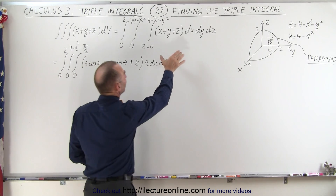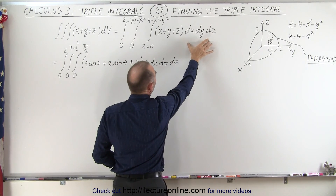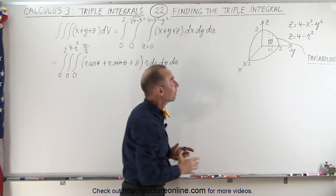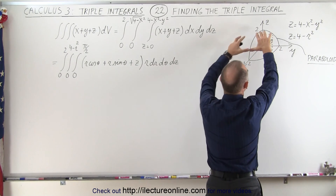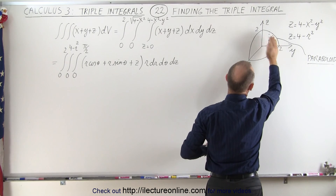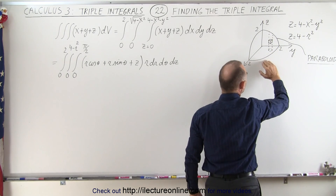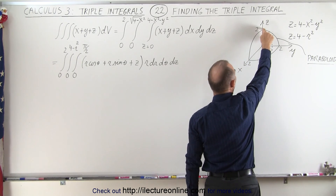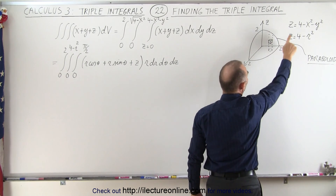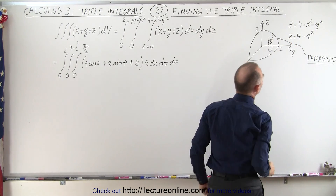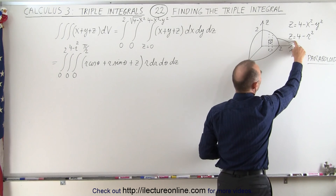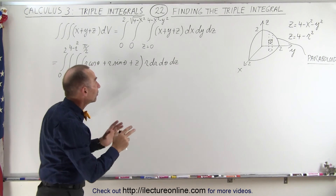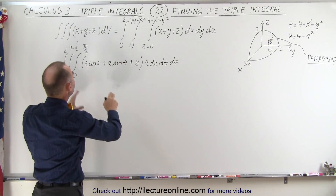Here we have an example where we're going to multiply the function x plus y plus z times the volume element in rectangular coordinates and then integrate over the limits. The limits are a region defined by a paraboloid at the top, only in one quadrant above the xy plane. The paraboloid is defined by z equals 4 minus x squared minus y squared, and we can also write this in cylindrical coordinates as z equals 4 minus r squared. It's actually easier to do this integral in cylindrical coordinates.